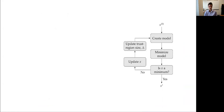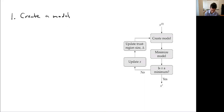Here's a diagram of the method. Basically there are two steps, similar to the line search — two things we repeat over and over. First, we create a local model about the current point.